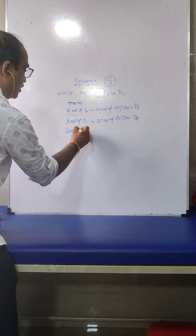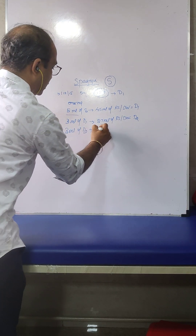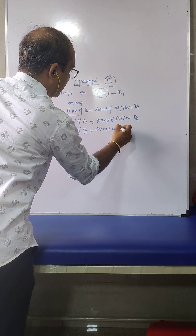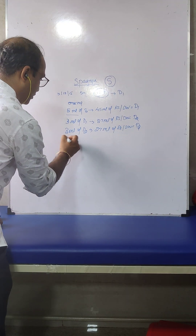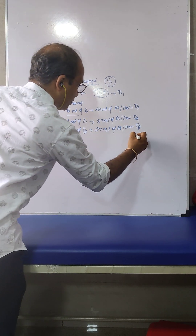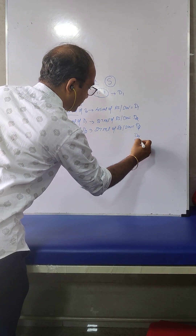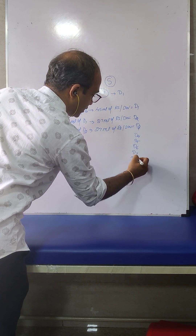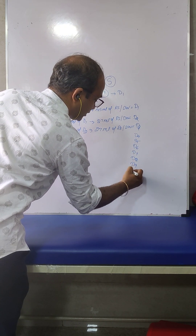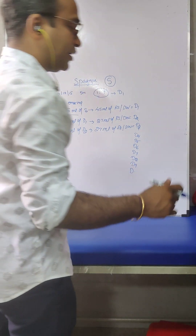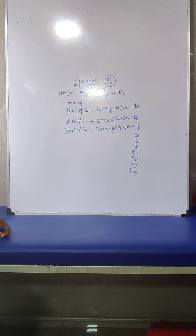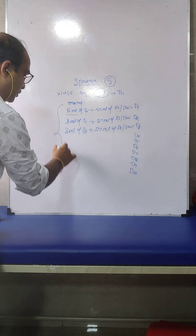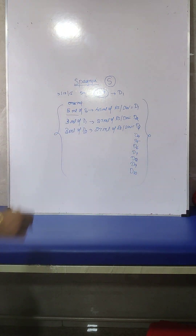Then, 3 ml of D2 plus 27 ml of RS, with distilled water, gives D3. That means in mind you prepare D4, D5, D6, D7, D8, D9, and then D10. D10 is the same thing — following the same method throughout.